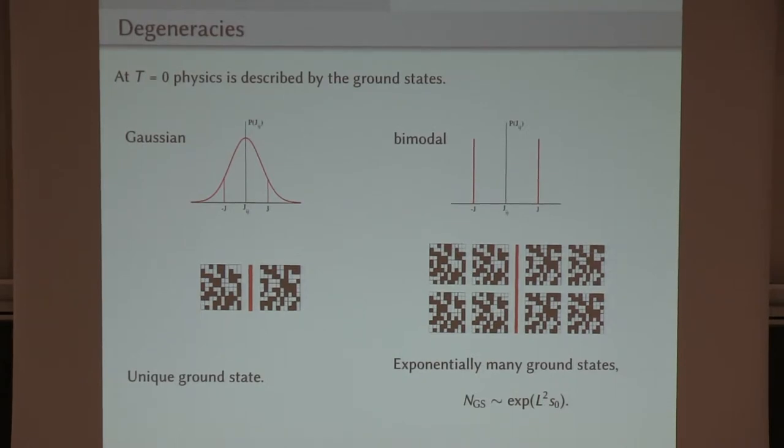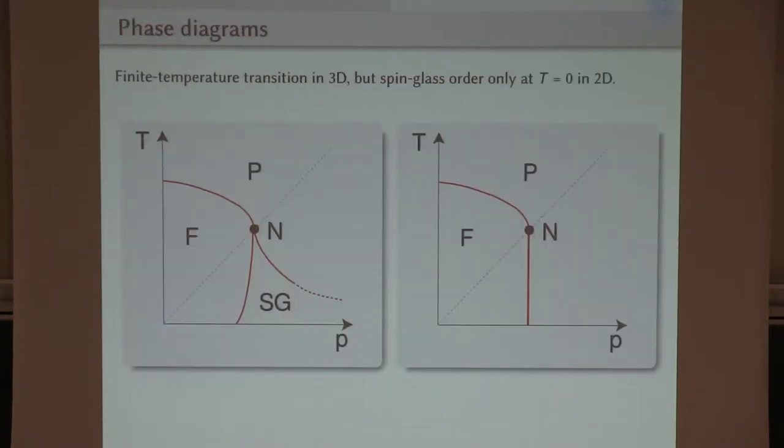And there clearly there is a difference because if you have a continuous distribution of couplings, you have a unique ground state or a unique pair of ground states, whereas if you have a bimodal distribution, then you have many ground states. And in particular, you can convince yourself that there is an extensive ground state entropy.